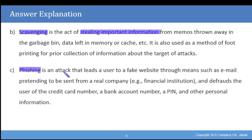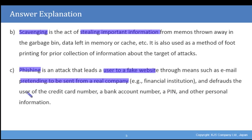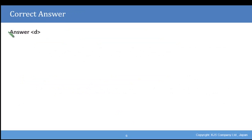In c) we had phishing. This is an attack that leads a user to a fake website through means such as email pretending to be sent from a real company, e.g. a financial institution, and defrauds the user of credit card numbers, bank account numbers, pin numbers, and other personal information that can later be used to hack accounts. So our answer was d). In this video we've looked at some of the different types of illegal activities that could occur on a network, their names and how they can be used.